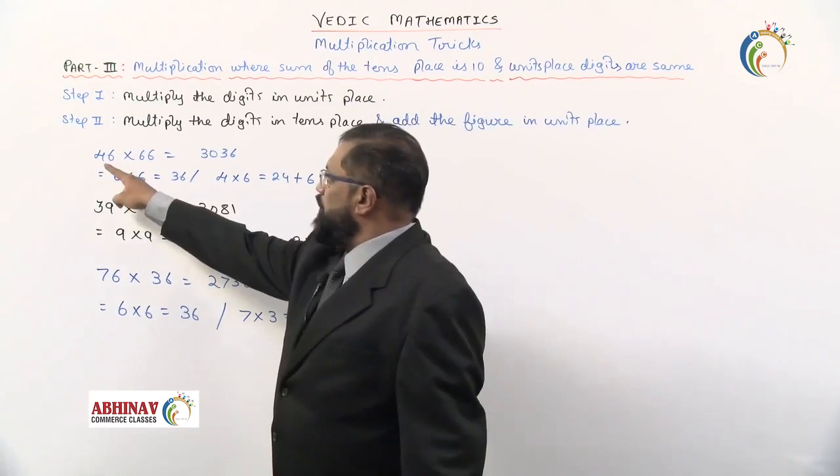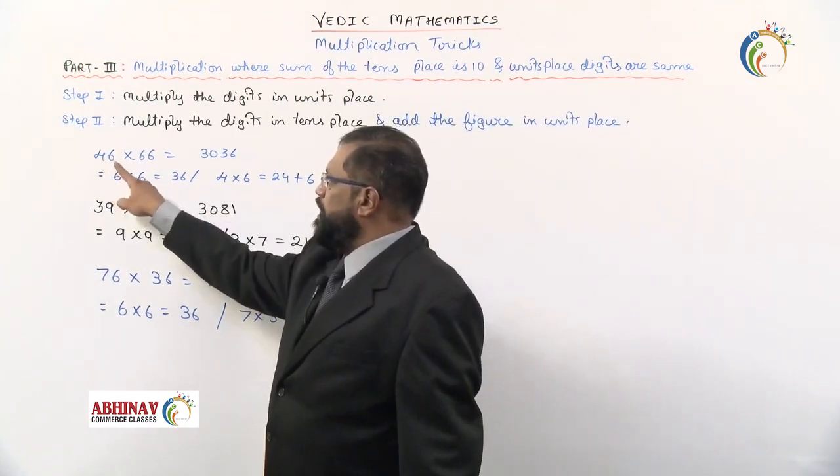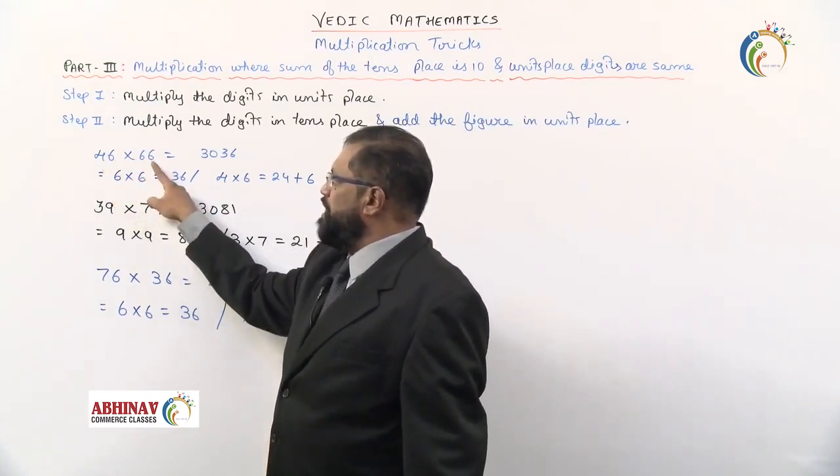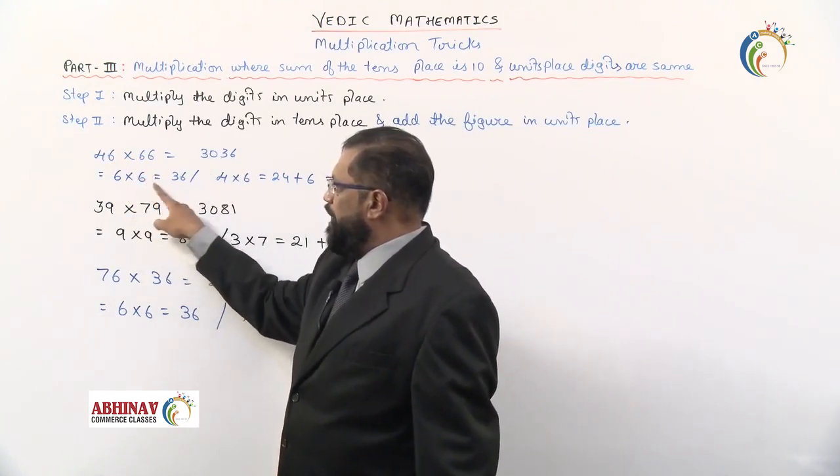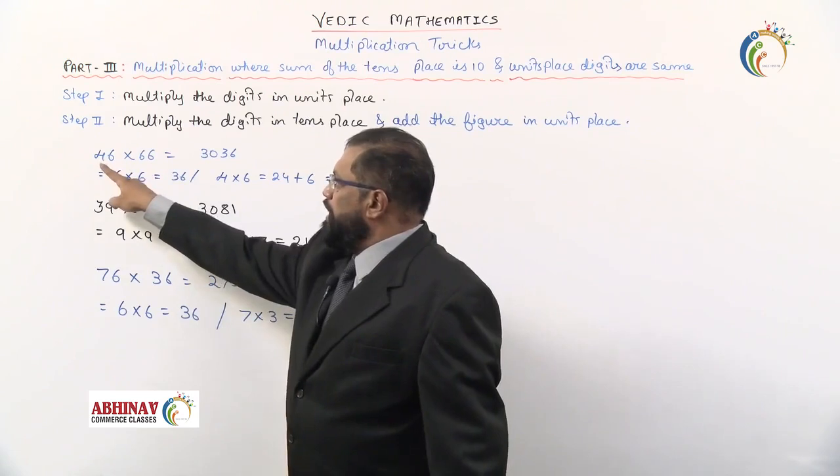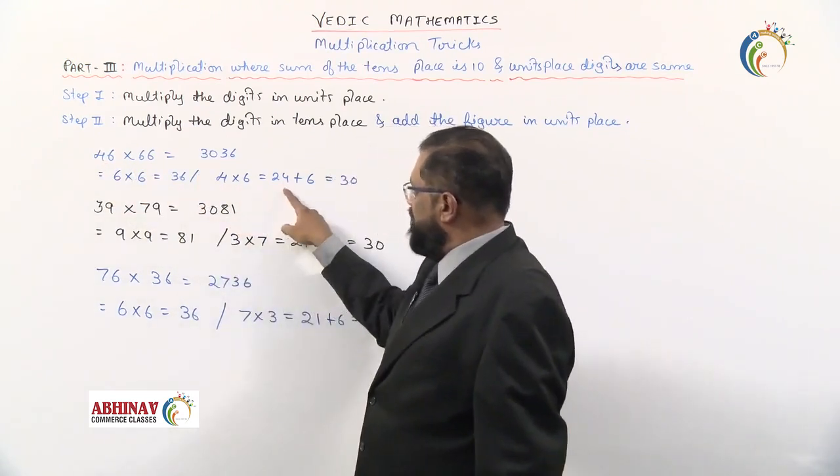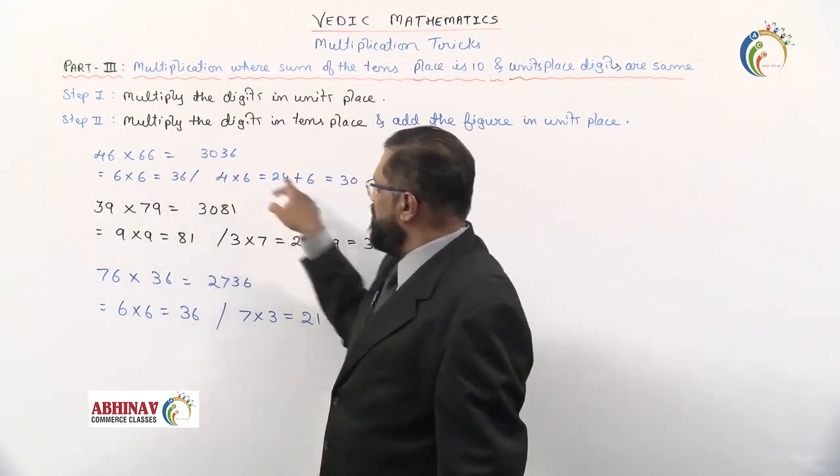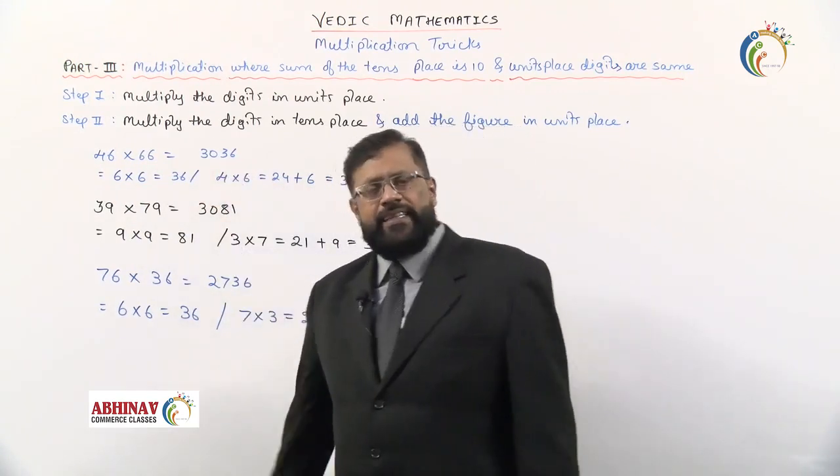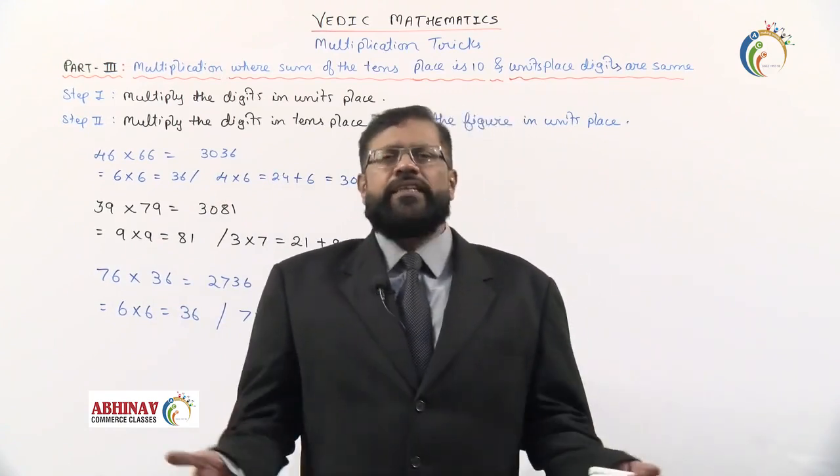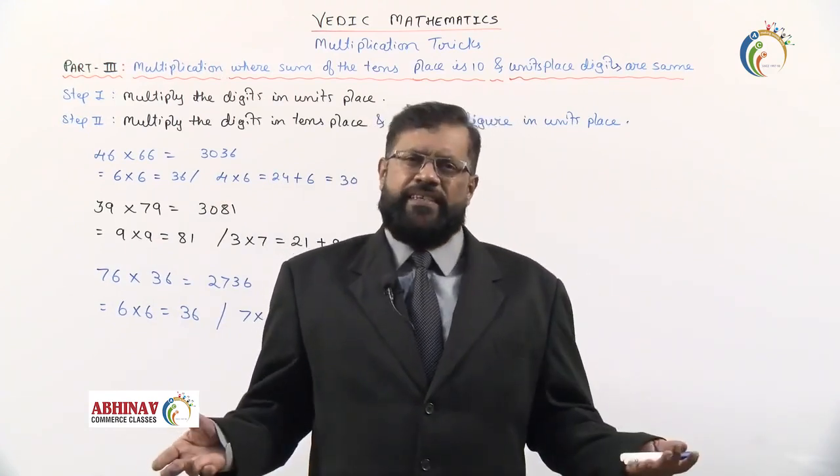This is how the multiplications have to be done. I repeat once: sum of the tens place is 10 and the units place numbers are same. In that case, what is done? Units place you first multiply, we get the answer. Tens place you multiply, we get the answer. To this answer add the units place figure. What we have, addition, write to the left hand side. The entire thing is the answer. That's all. Very simple are these tricks.